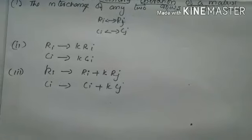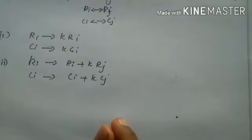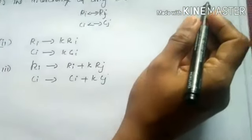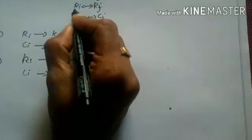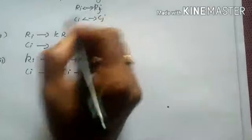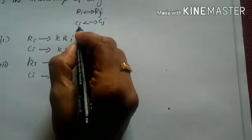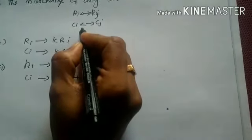Next is elementary operations of a matrix. There are 6 elementary operations or transformations on a matrix: 3 due to rows and 3 due to columns. The first is the interchange of any two rows or two columns. For example, the first row can be shifted to the second row and vice versa — likewise for any rows. Similarly, any two columns can be interchanged.